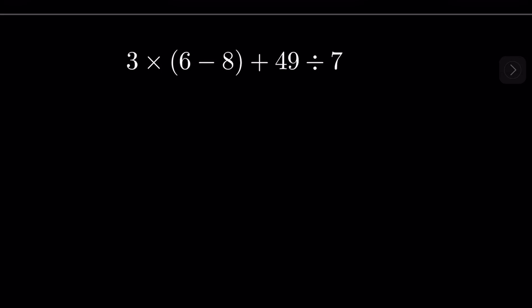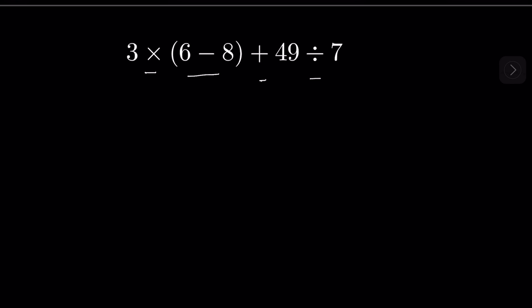3 multiplied by bracket 6 minus 8 plus 49 divided by 7. Here we have multiple operations: multiplication, brackets with subtraction within, addition, and division. So which operation should we do first? This is based on the concept of order of operations.